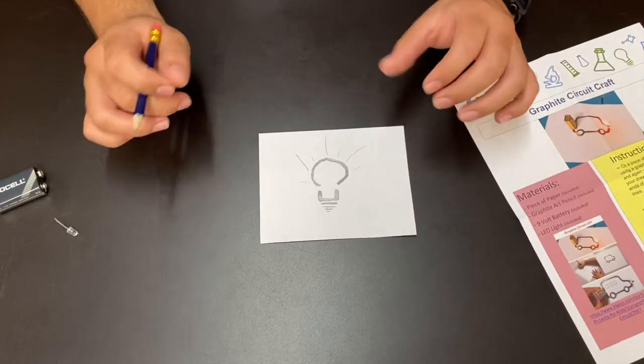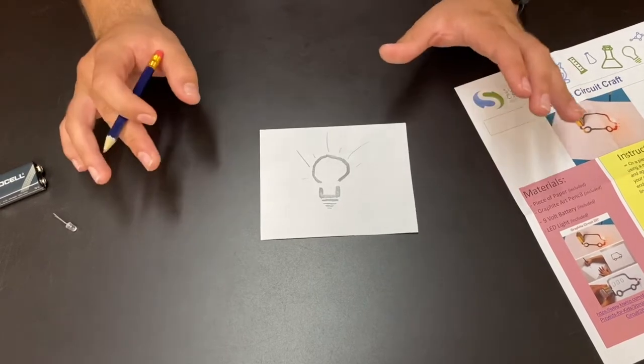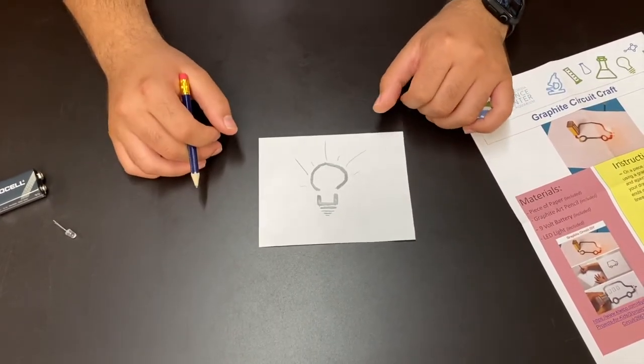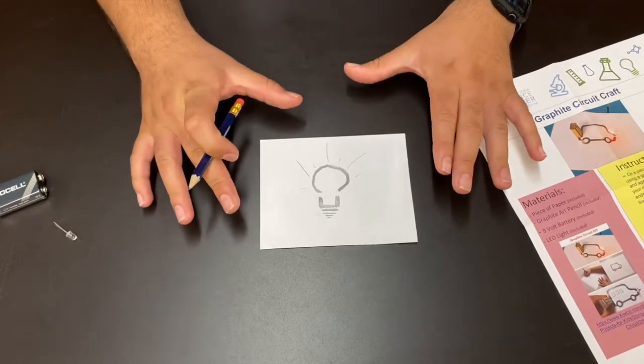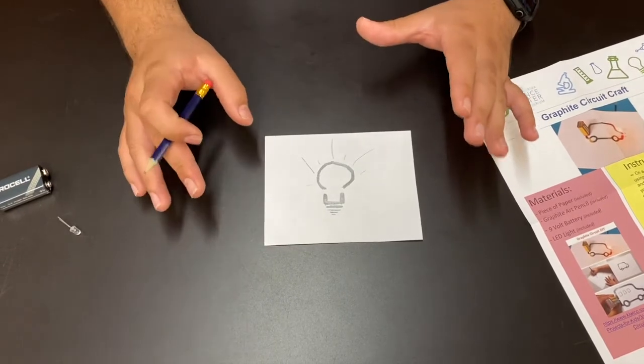All right, now that we have our drawing done, we're going to do a couple of things to make it easier for us to complete our circuit. If you've never dealt with circuits before, we have a couple different videos that you guys can watch—I'll link up to those above. But the basic thing you want is to make sure that the positive end of your battery is also going to connect with the positive end of your LED light.